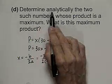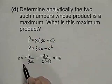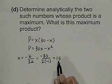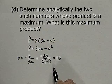We want to determine analytically the two such numbers whose product is a maximum. Well, one of the numbers is 15, and if the sum of the two is 30, the other number is also 15.